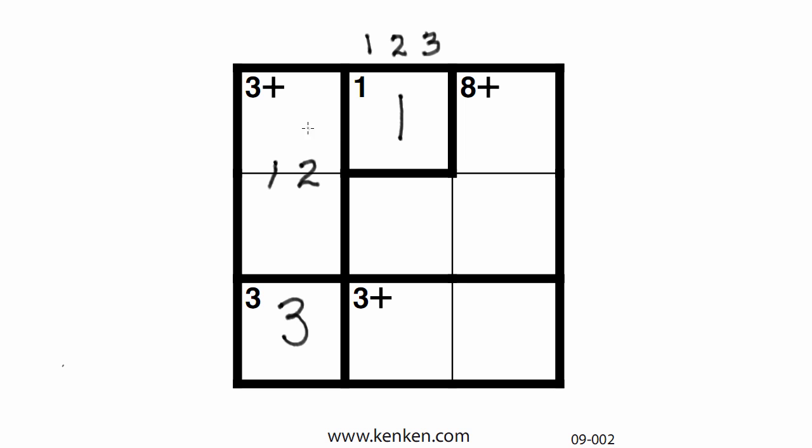And now we can use our logical reasoning sense and figure out these two particular squares right here. Because that square here can no longer be a 1 because we have a 1 right here. Therefore, this must be a 2 and underneath that must be the 1. And so we have this column all filled in. It must be a 1, 2, and a 3.